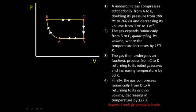We're given all the information we need on the right hand side in steps 1, 2, 3, and 4. For the first step, the monatomic gas compresses adiabatically from A to B, which is this portion of the PV diagram, doubling its pressure from 100 Pa to 200 Pa and decreasing its volume from 3 m³ to 1 m³.